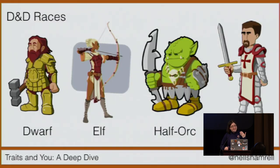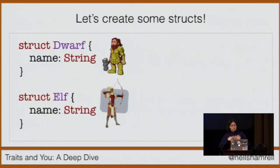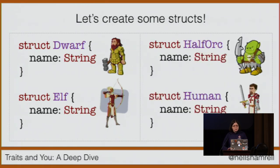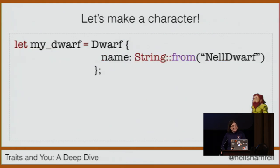In Dungeons and Dragons, you start a game by creating a character. The first thing you select about that character is its race. There are nine to choose from, but in this talk let's first focus on four: a dwarf, an elf, a half-orc, and a human. Let's represent these by creating structs. In Rust, structs are a fantastic way to name and package together different values into a meaningful group. We create a struct for a dwarf, one for an elf — right now the only field we'll worry about is the name of the character — and then one for a half-orc and another for a human. We can then create an instance of one of these structs, naming our dwarf Neldwarf.